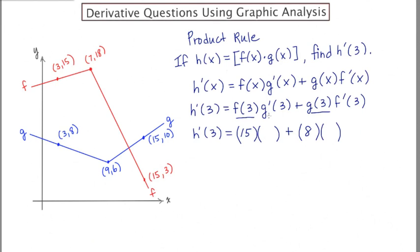Now let's find g prime of three. This is the slope of the tangent line of the g graph when x equals three. Since this is a straight line segment, the tangent line is just that segment itself. The slope is the change in y over the change in x: eight minus six over three minus nine, which gives two over negative six, reducing to negative one third. So the slope of the tangent line at x equals three on the g graph is negative one third.